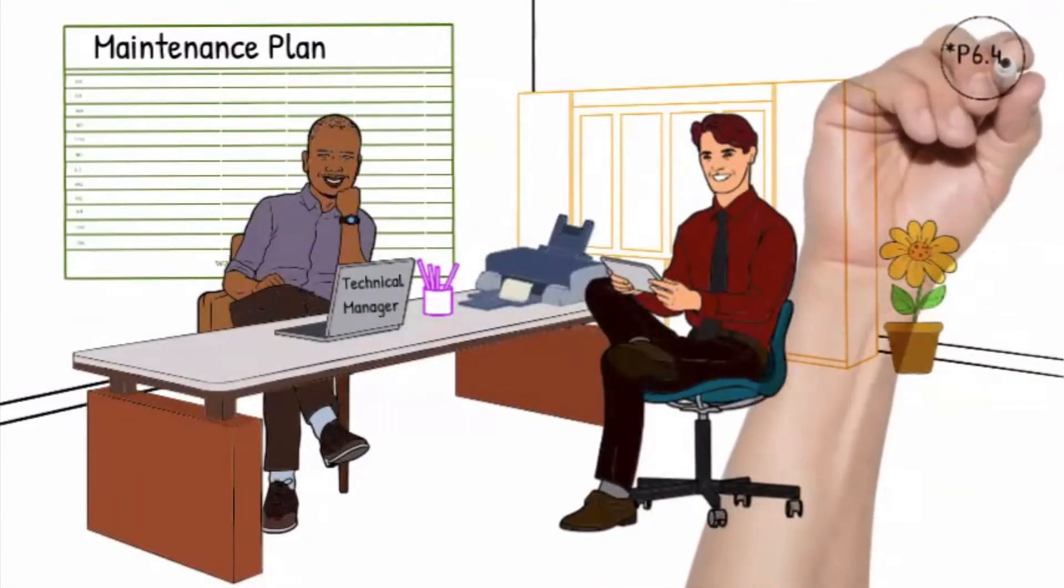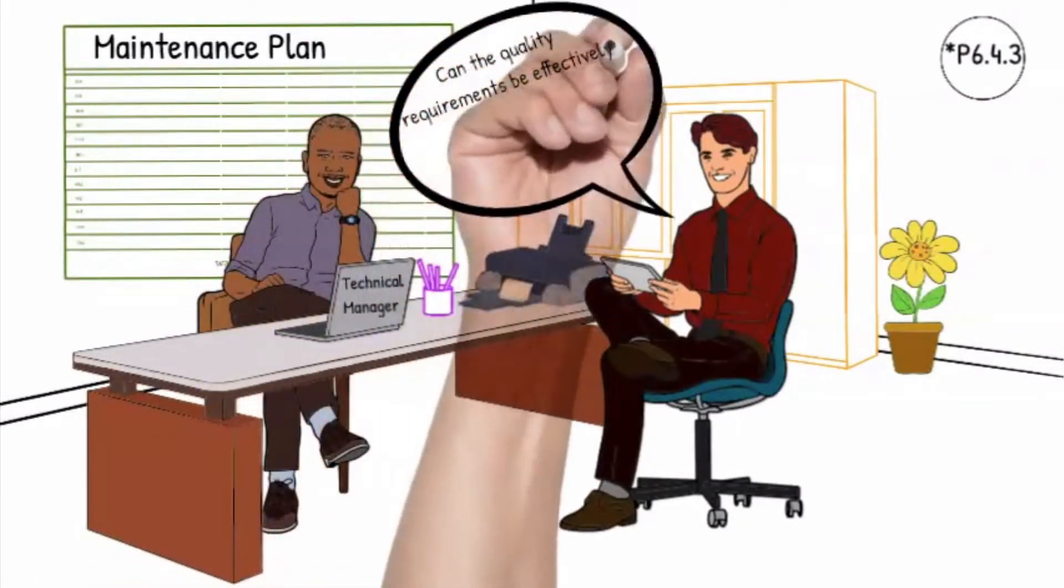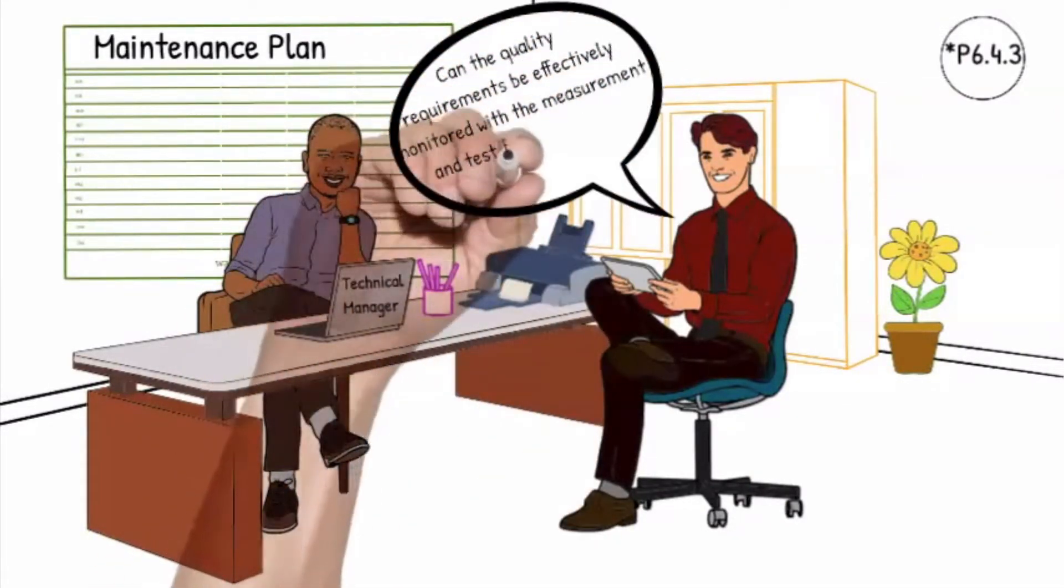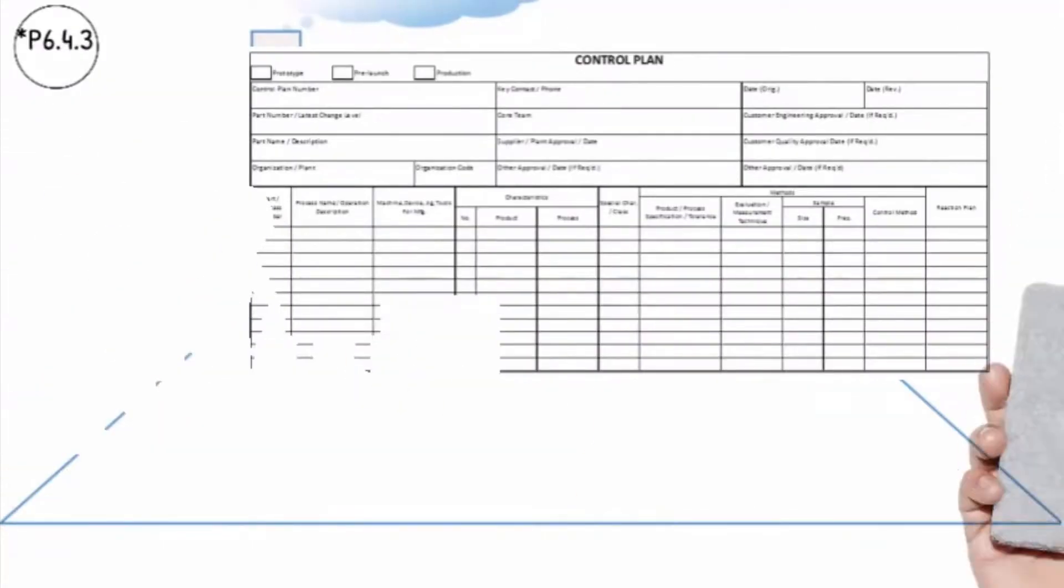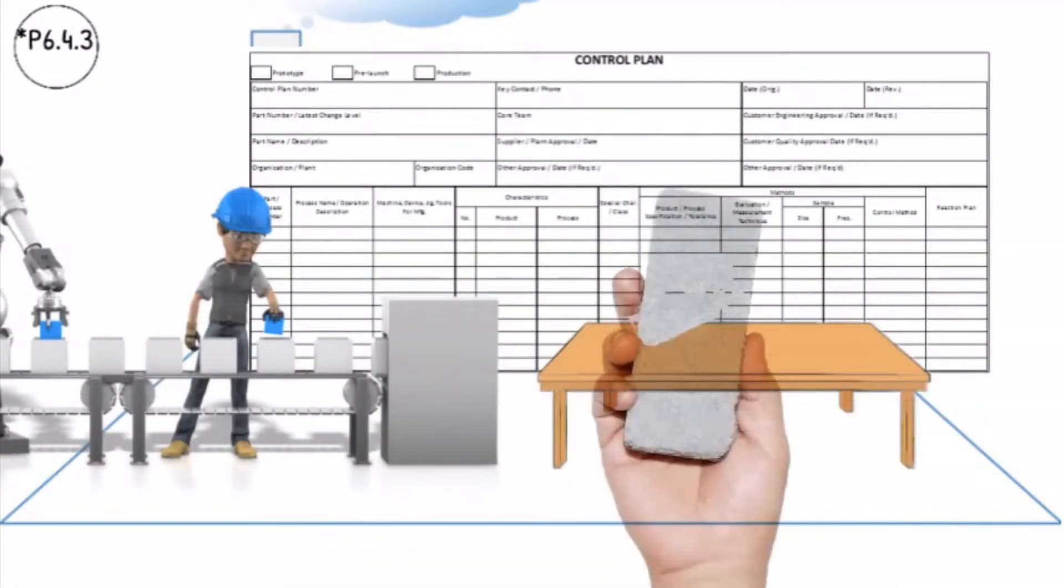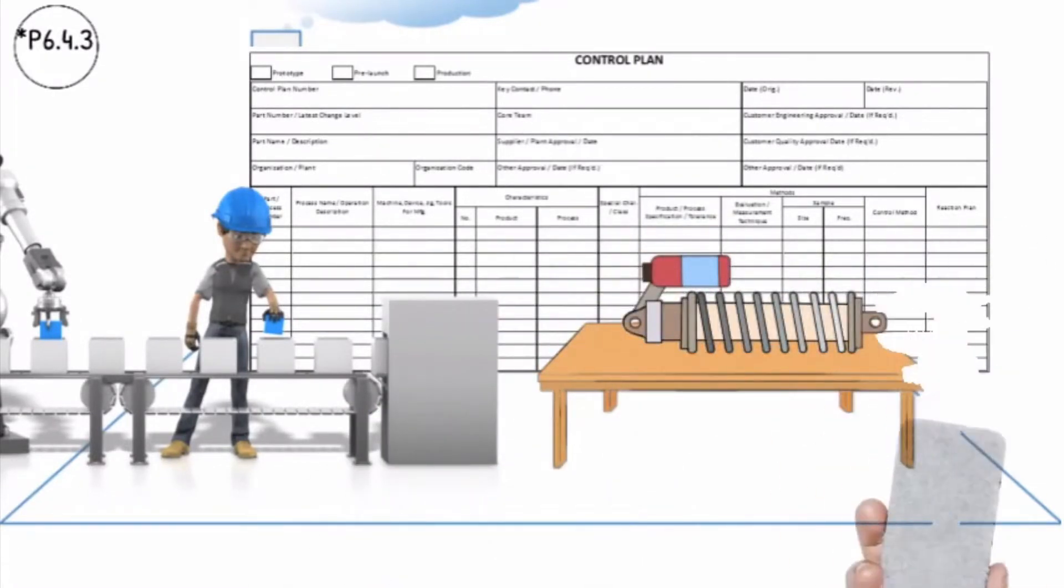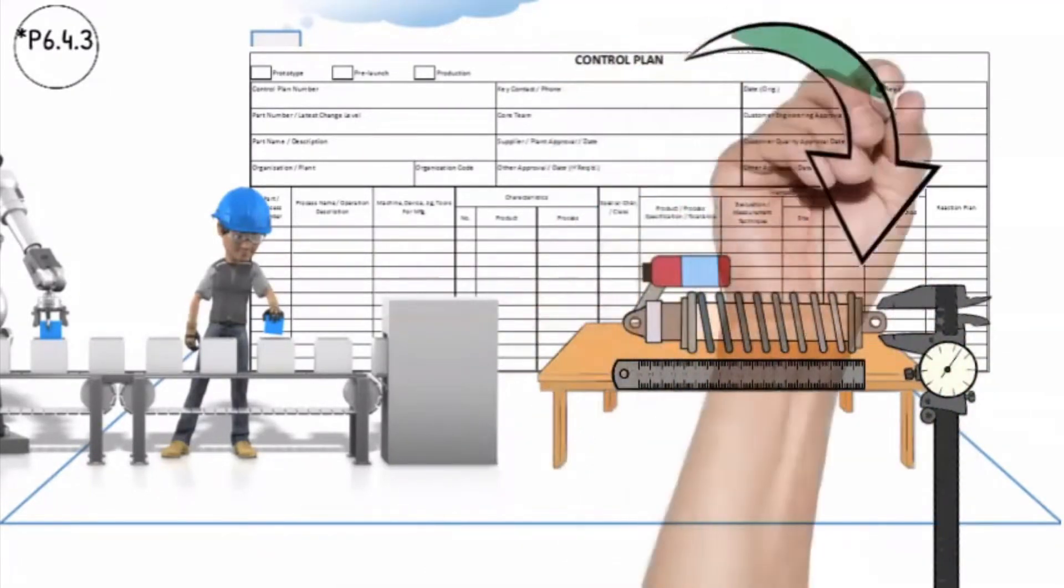P6.4.3 Can the quality requirements be effectively monitored with the measurement and test facilities in use? The quality of our products is continuously monitored during all stages of the production process with test and measurement equipment to ensure that internal and customer requirements are met in accordance with the control plan.